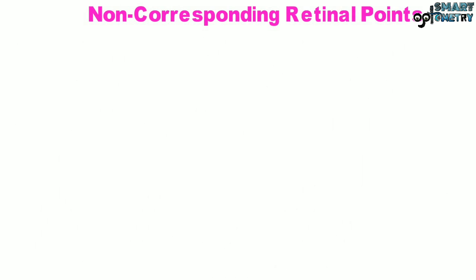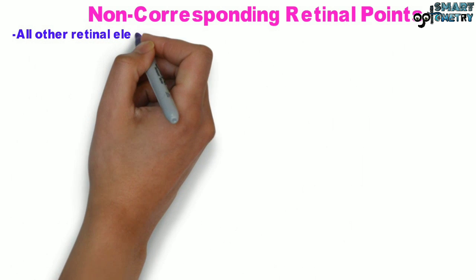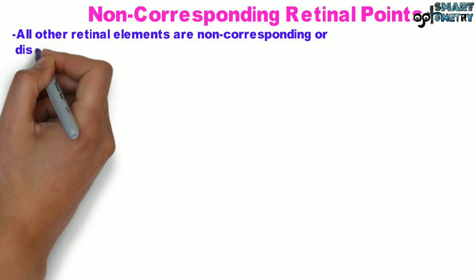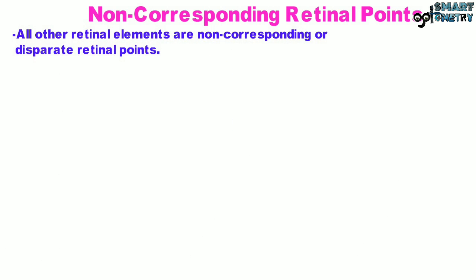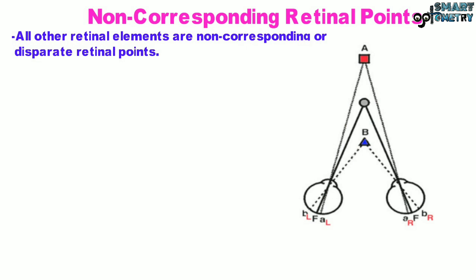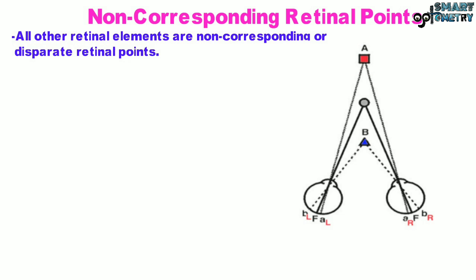Non-Corresponding Retinal Points: All other retinal elements are non-corresponding or disparate retinal points. In the diagram alongside, you can see that the fovea of both eyes are stimulated by a common fixation point straight ahead. Another point A stimulates nasal points A-L and A-R in the left and right eyes respectively. These points, being non-corresponding points, have different visual directions that cross beyond the fixation point, so the object appears to be further away.